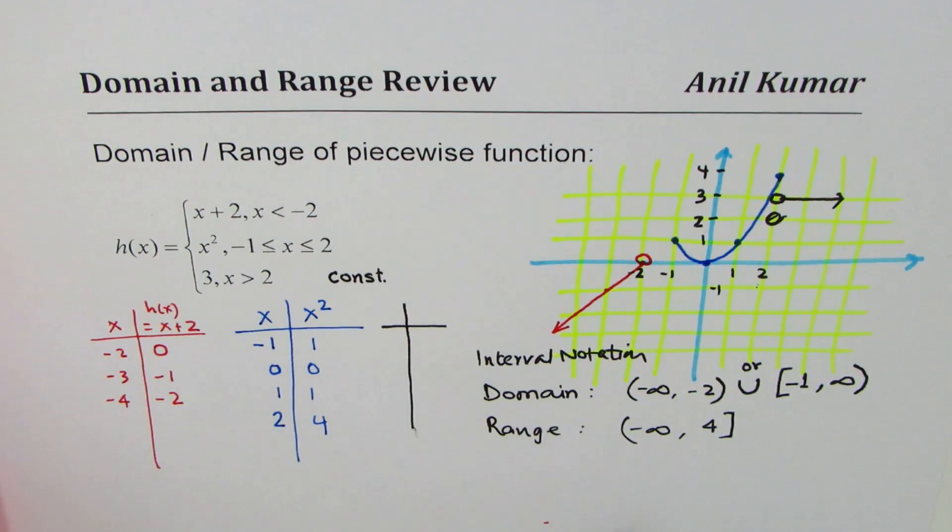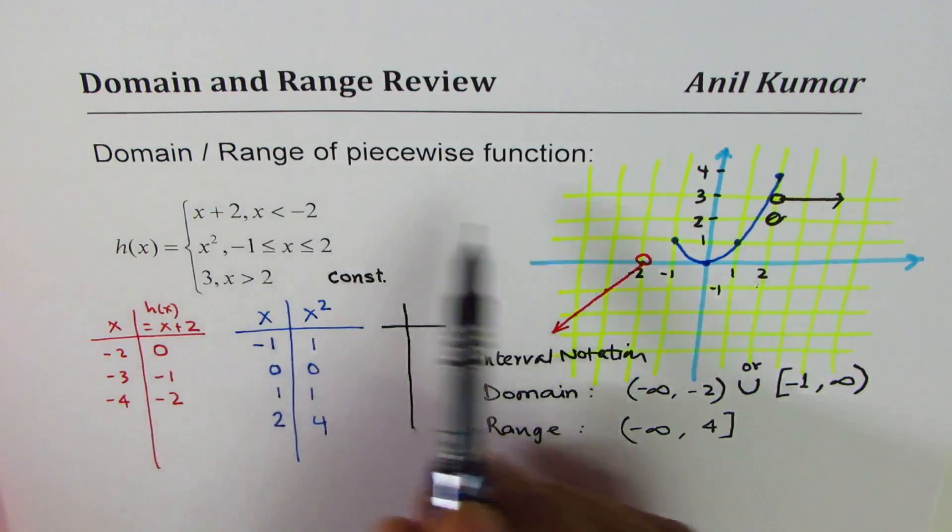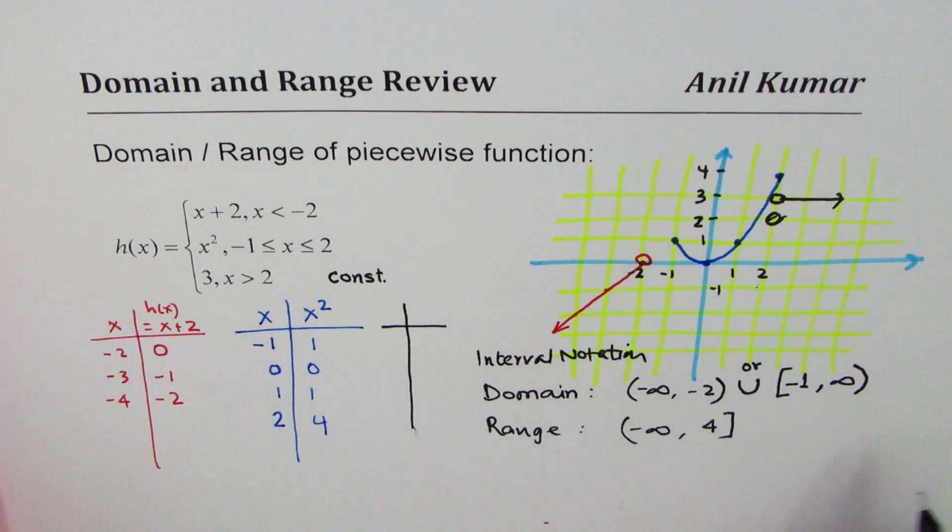As an exercise, I'd like you to write domain and range for this piecewise function in different notations which you've learned. For example, the set notation.